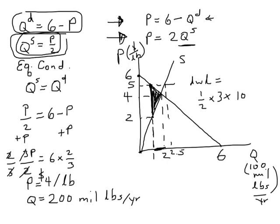That was 100 million pounds per year. All right, so what am I left with? 1.5 times 3 is 4.5. 100 million. I'm left with 150 million dollars per year in deadweight loss.